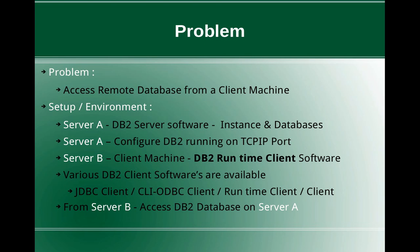In Server B, which is the client machine, we need to install DB2 runtime client software. Various DB2 client softwares are available — if your application is a Java application you can use the JDBC client software, if it is CLI or ODBC you can use the CLI or ODBC client software. The runtime client has functionality of both the JDBC client and the CLI/ODBC client, along with tools like the DB2 command line processor. The full client — IBM DB2 Data Server Client — is also available with additional GUI-based tools like Configuration Assistant.